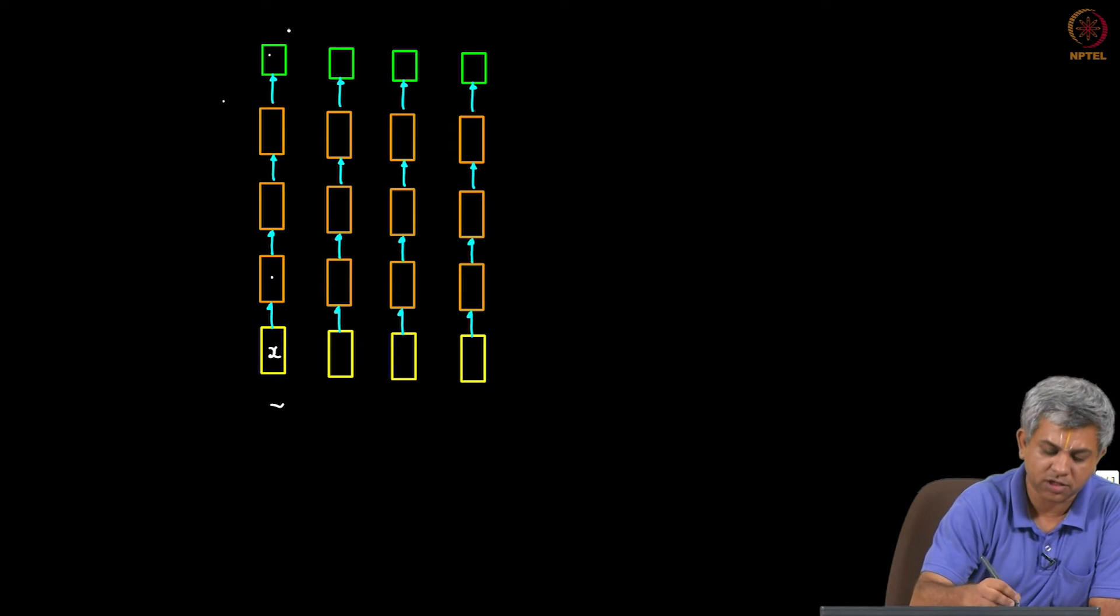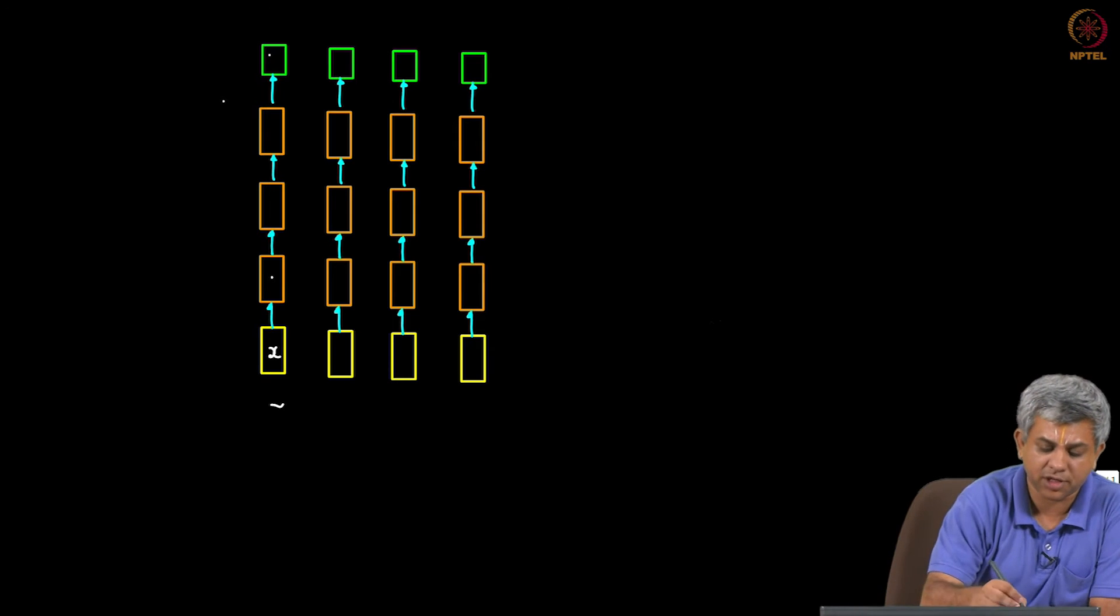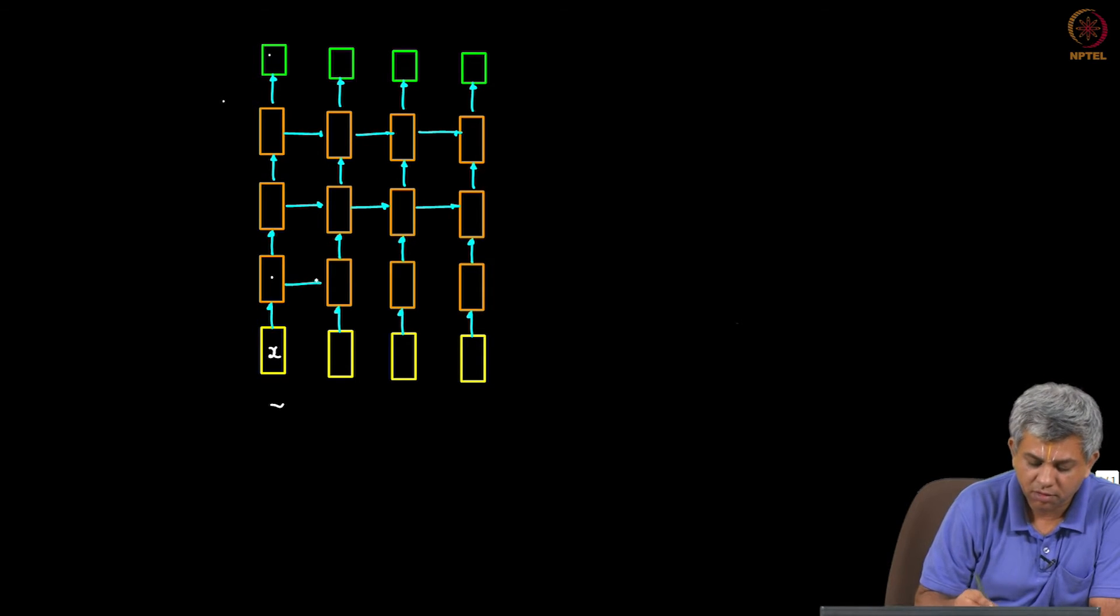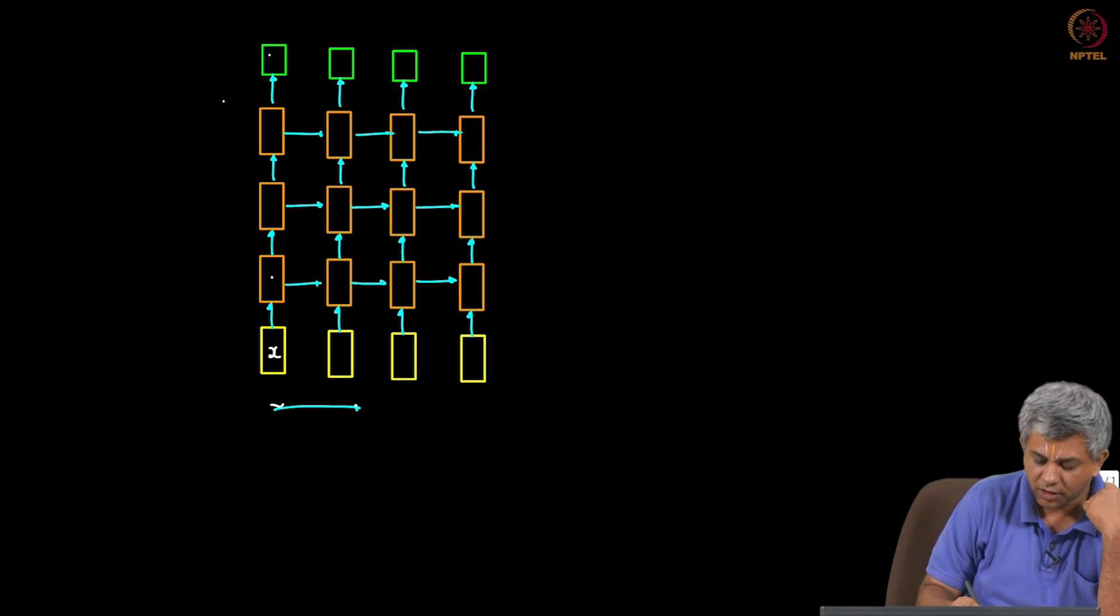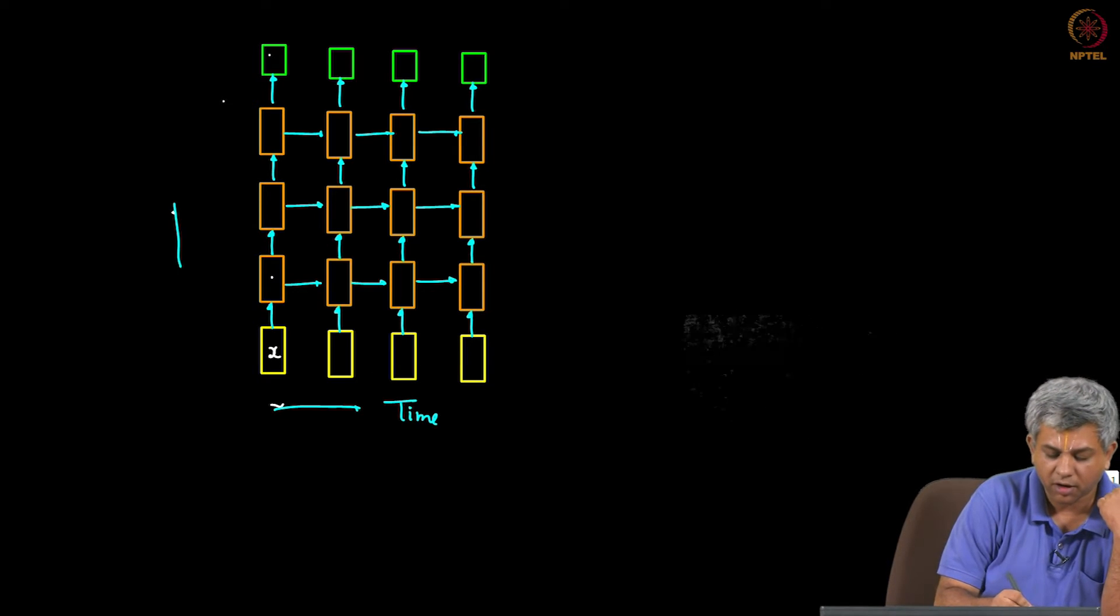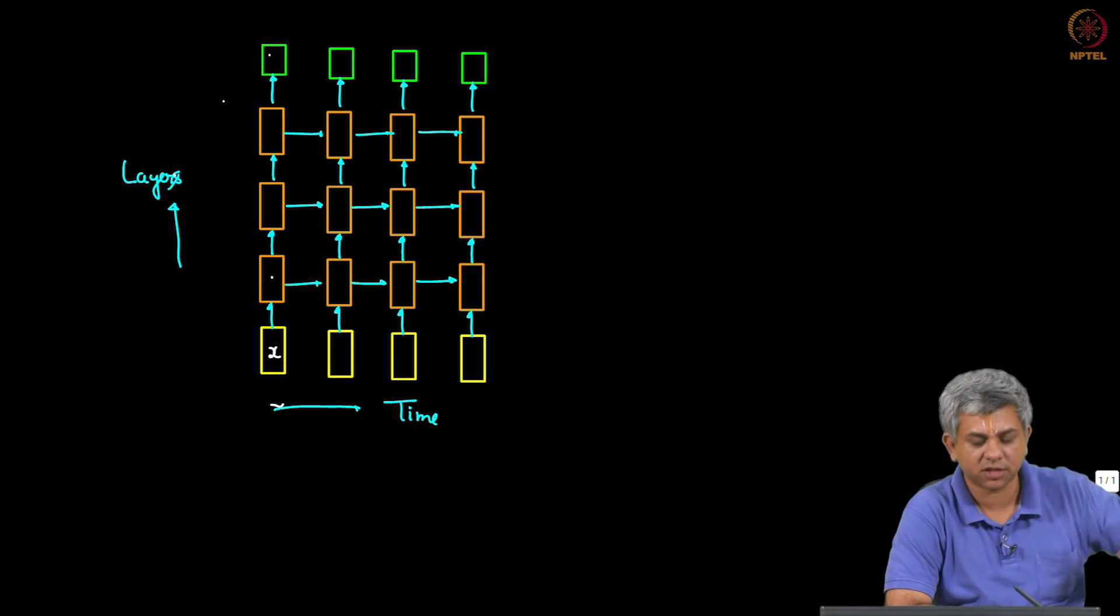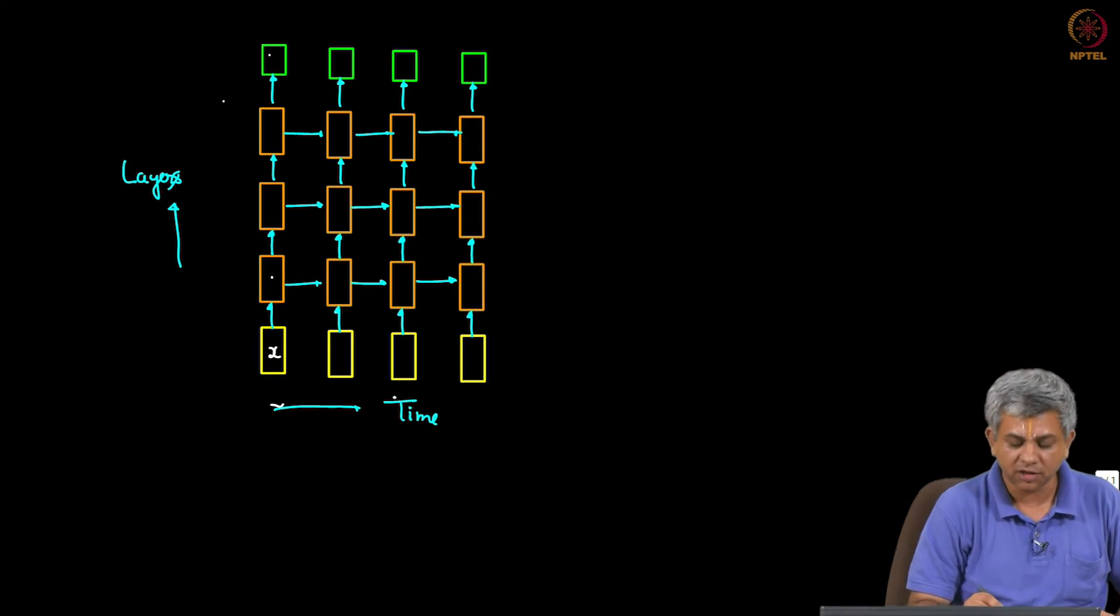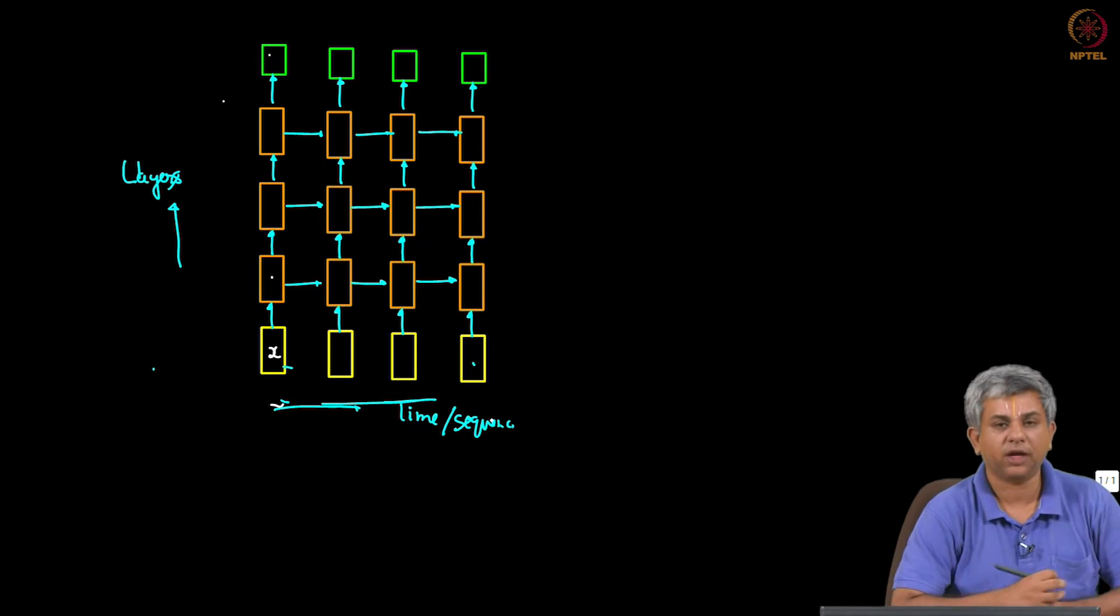So now each of these could by themselves be LSTMs etc. Let us assume that each of these are actually deep networks. Now all that happens here is there is a connection between each layer or each time sequence. Remember in this direction we have time and in this direction we have layers. So the number of layers decide how deep it is. Though sometimes by abuse of notation even I have said this is depth, this direction is not really depth. Depth actually is along the layers. So this is either time or sequence.